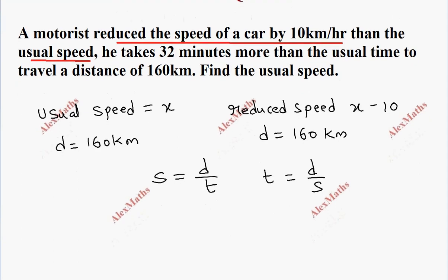In the usual speed, the time will be t1. The distance is 160 and speed is x. When he reduces the speed, the time will be t2. Distance is 160 but speed is x minus 10.